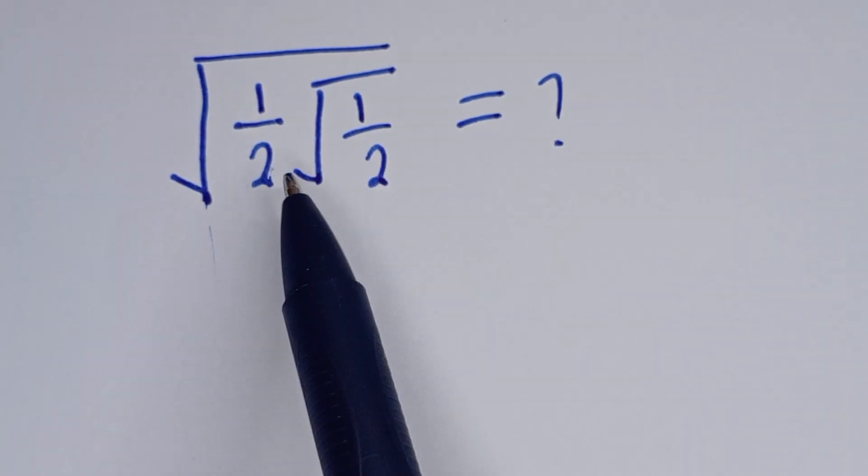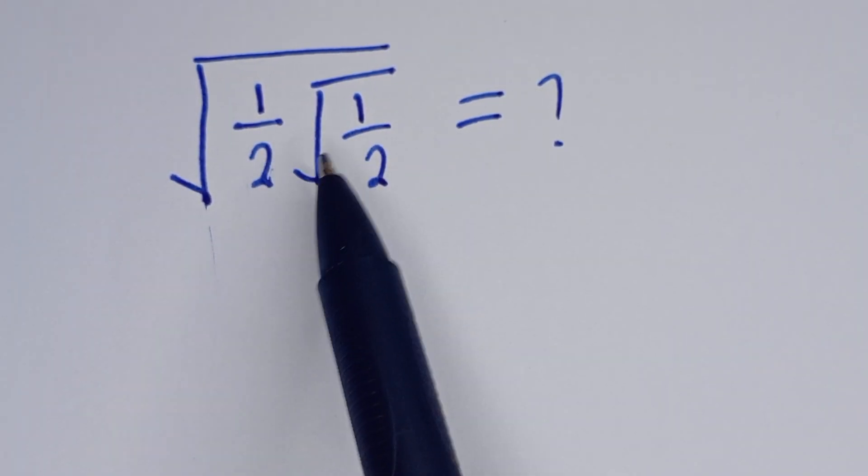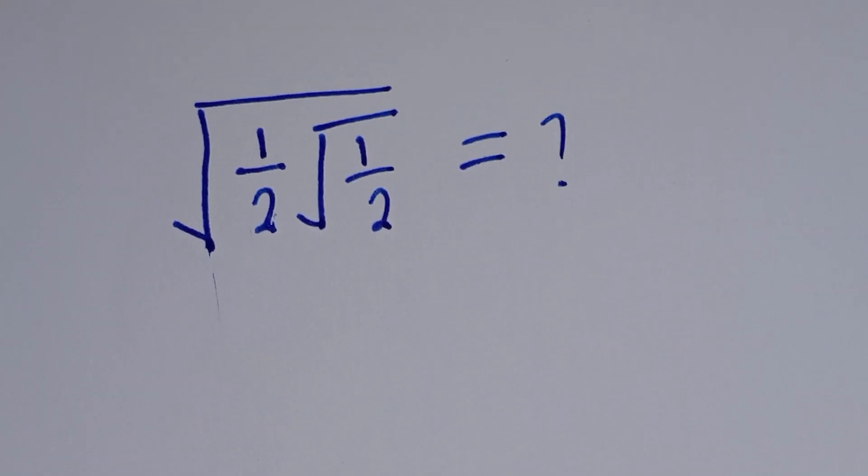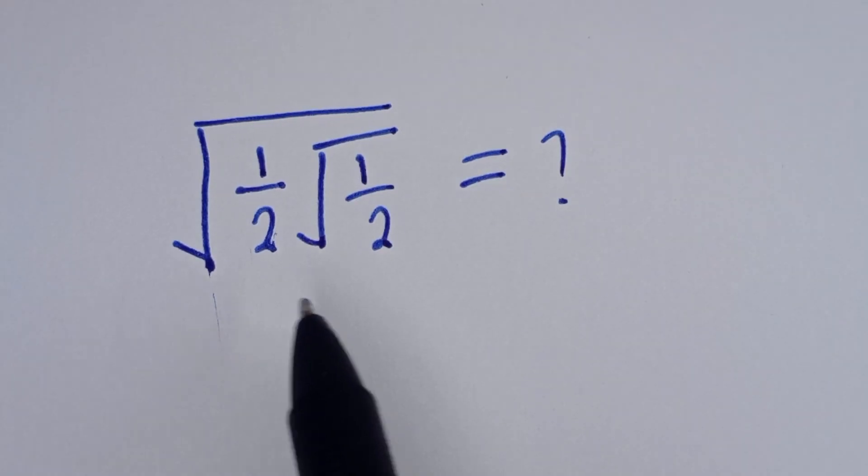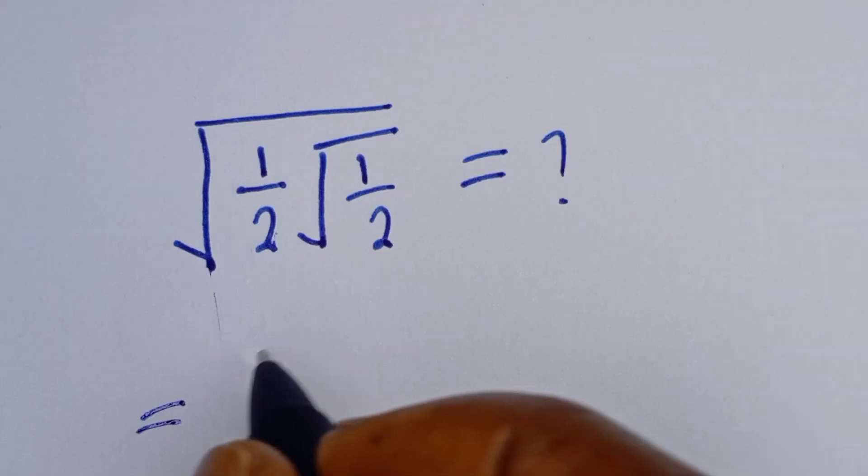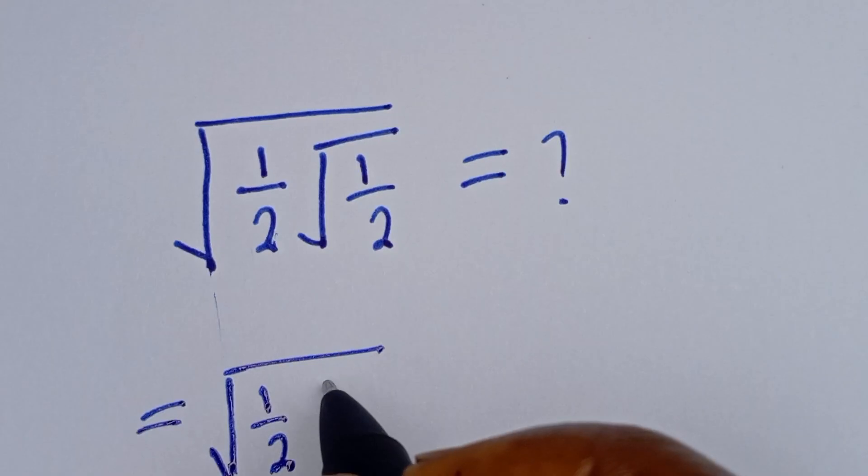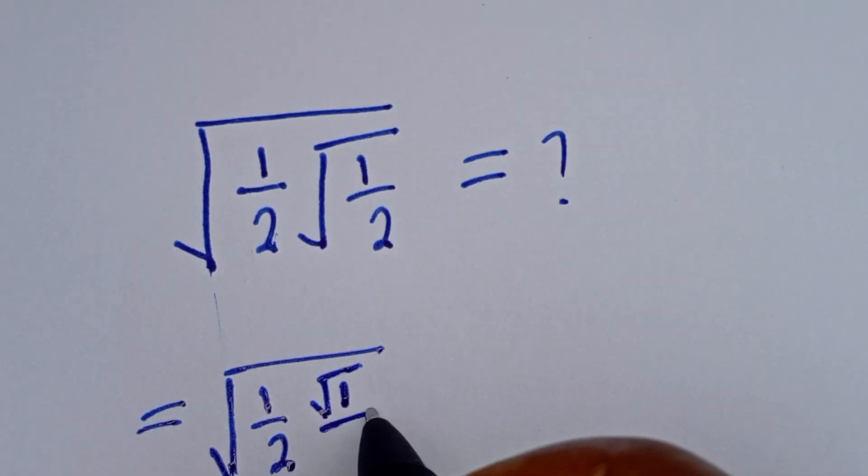Hello, how to simplify this nice math problem: square root of 1 over 2, square root of 1 over 2, is equal to what? Now this can be written as the square root of 1 over 2, and this is the square root of 1 divided